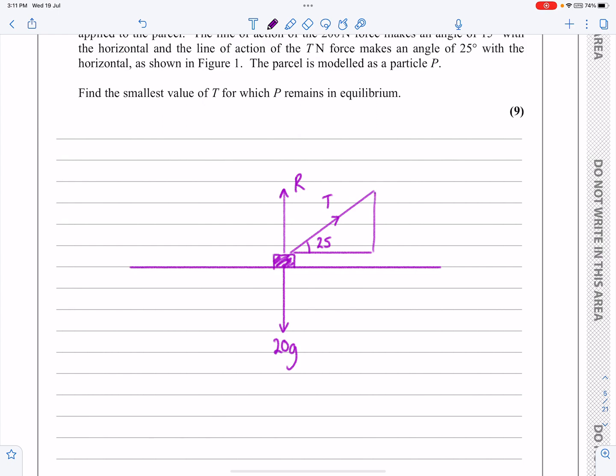So there should be absolutely no issues with the fact that this one's going to be T cos 25 and this one's going to be T sine 25. So we've taken the T and resolved that into its horizontal and vertical.